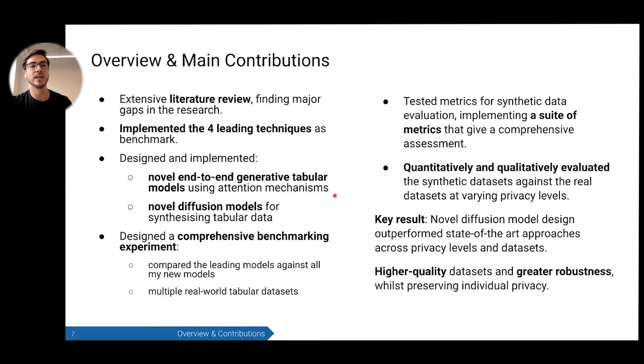First, I looked at doing novel end-to-end generative tabular models that make use of attention mechanisms. These did really well as auto-encoders, but as soon as you add your privacy constraint, the model complexity is too high. So these didn't work particularly well. But then I looked into doing novel diffusion models that were optimized for tabular data. And these performed really well, as we'll see later on.